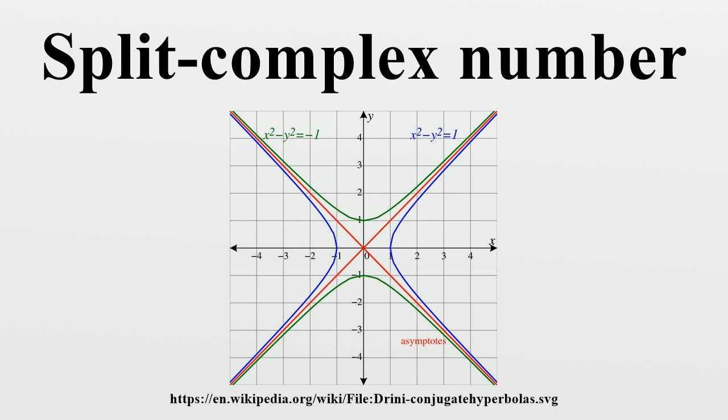Addition and multiplication of split complex numbers are defined by (x₁+jy₁)+(x₂+jy₂) equals (x₁+x₂)+j(y₁+y₂). This multiplication is commutative, associative and distributes over addition.